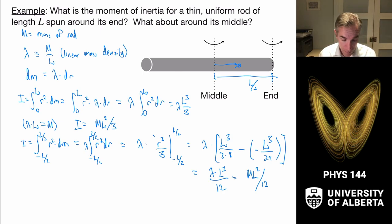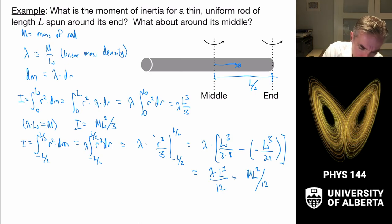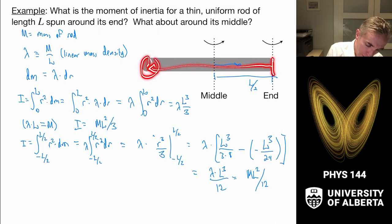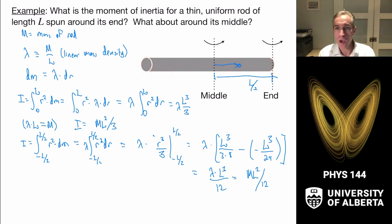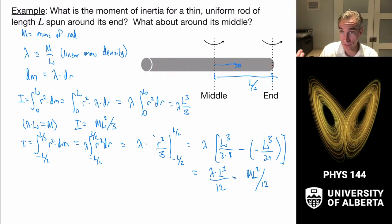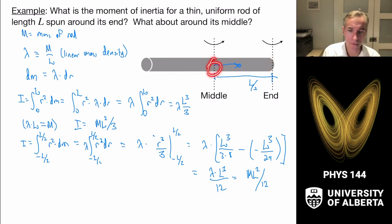We see that the moments of inertia depend on where they are spun. The general sense is that mass located farther from the axis matters quadratically — it depends on distance squared. So moments of inertia for things spun around their end are larger than for things spun around their middle.